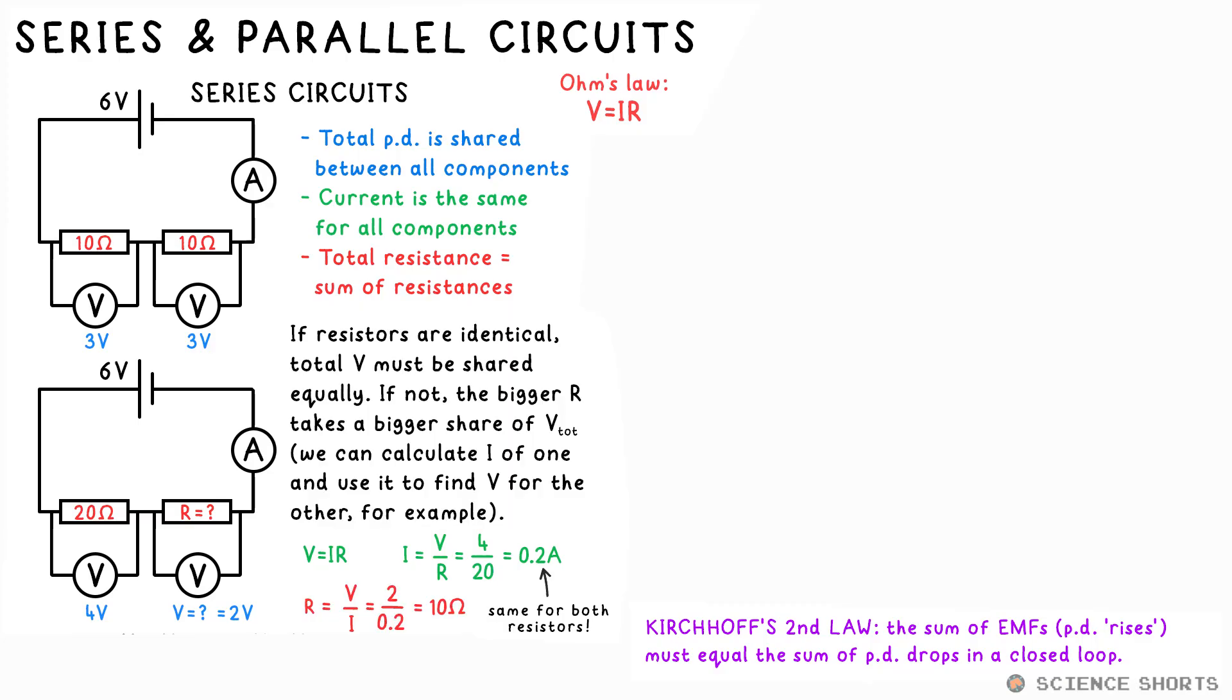The rule of thumb is this. The greater the resistance, the greater the share of the total PD it gets. We can also use Ohm's law for a whole circuit. We just need to make sure we're dealing with the total PD, total current, and total resistance.